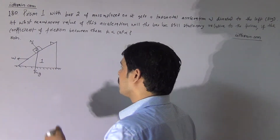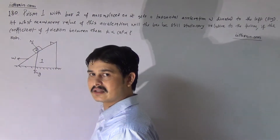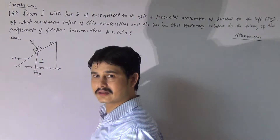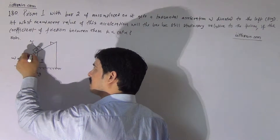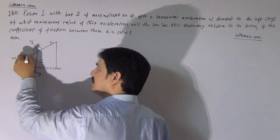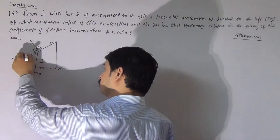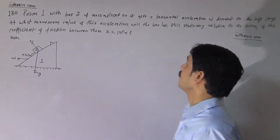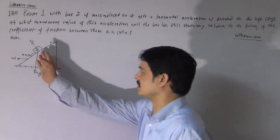For the block to be in rest or in the upward direction of motion, friction will act downward. The friction force is KN. Normally, if you ask what will be the minimum value of acceleration, then friction acts upward.